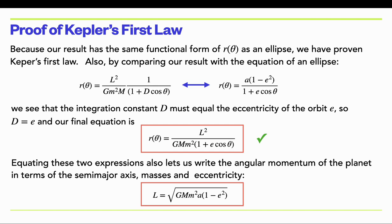We also get a bonus by comparing the constant out front — L²/(GMm²) — with the ellipse constant, allowing us to write angular momentum in terms of the masses of the objects, the semi-major axis, and the eccentricity. Before, we only had the planetary ellipse in terms of geometrical variables. Now we've derived the path in terms of physical quantities: angular momentum and masses.